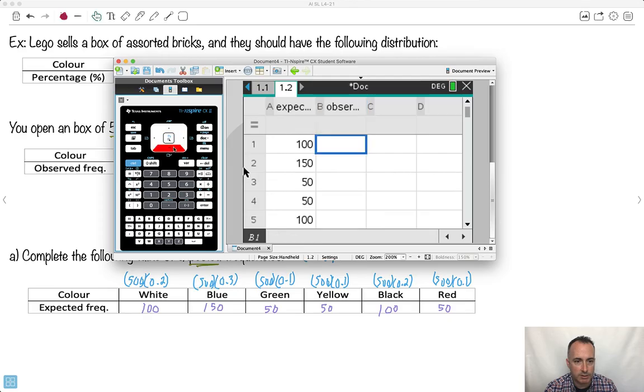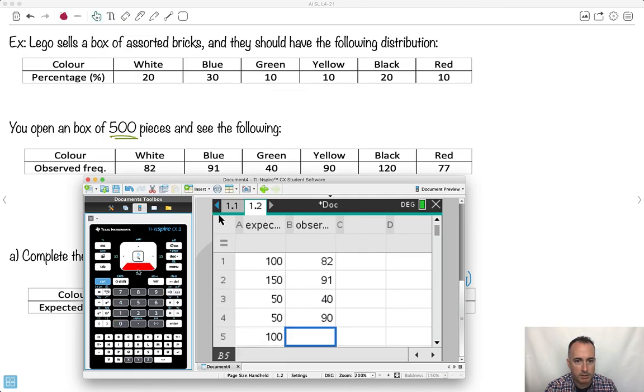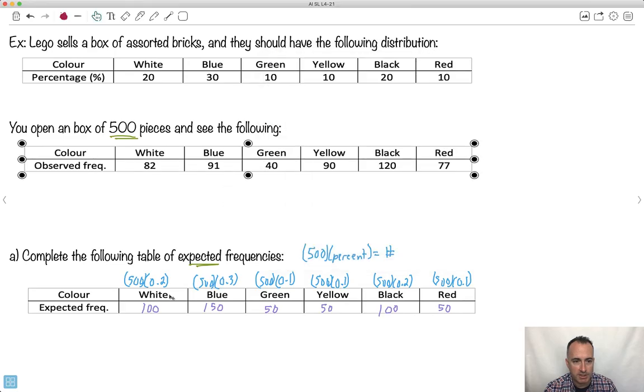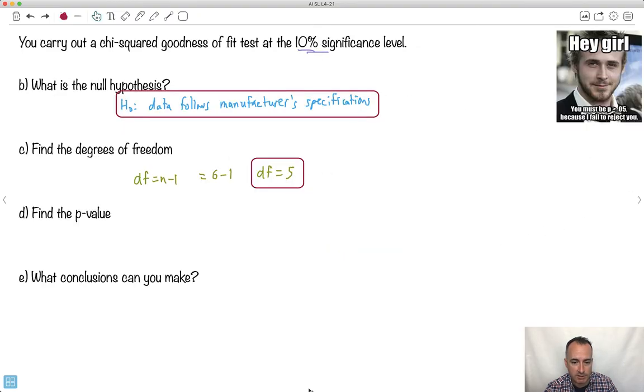The observed is slightly different. It's 82, that's not 100. And this here is 91, it's not 150. This is 40, 90, 120, and 77. What we're going to use this test to tell us is, are we close enough to this? Here's the whole question. These numbers are not the same as these. The question is, how much different are they? We're trying to find some tolerances. Are they similar enough? We're going to see if these are clearly different, but are they too different? Do they follow the specifications at 10%?